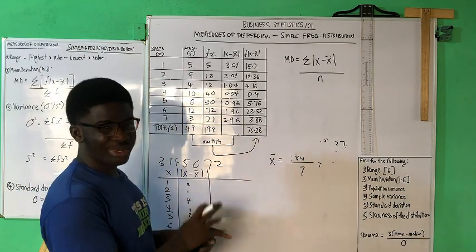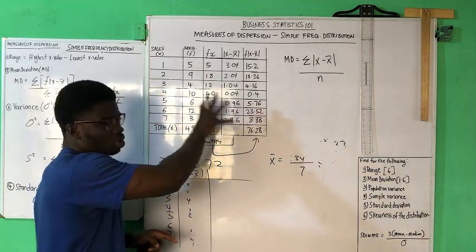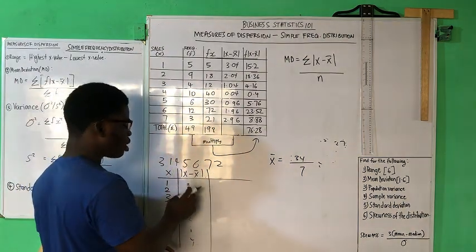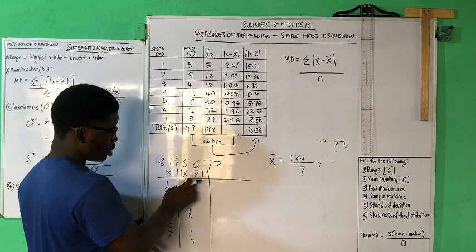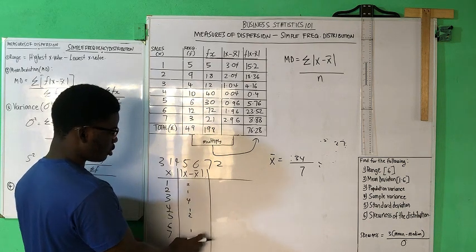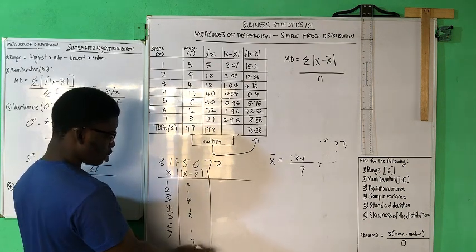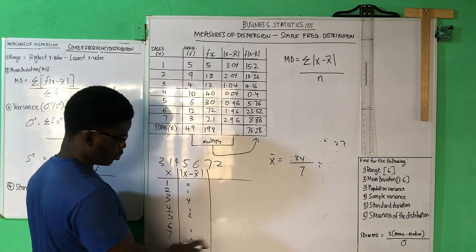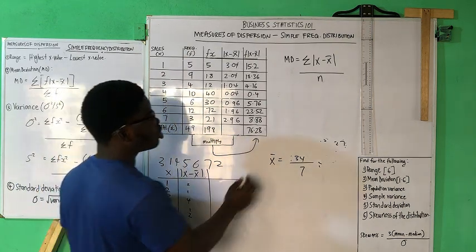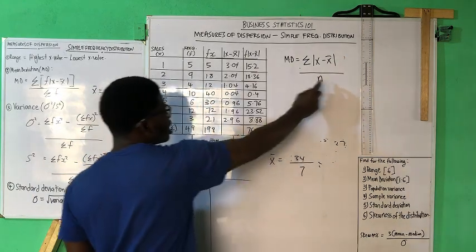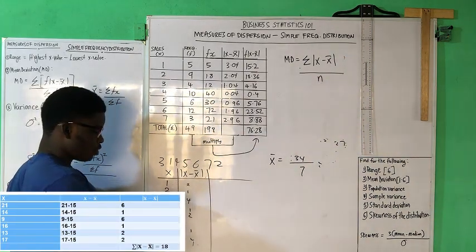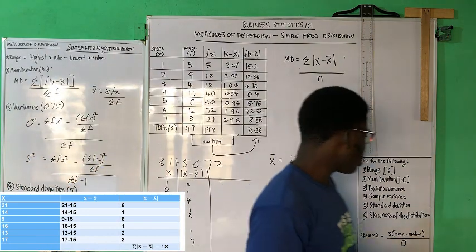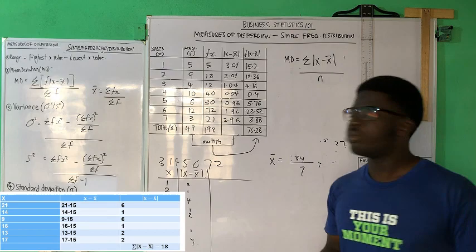This type of question doesn't usually come in examinations, but I want to explain how you go about it. When you get the deviation column, you sum it to get a total, and then you use that total over n, where n is the number of values. Moving on to the variance.